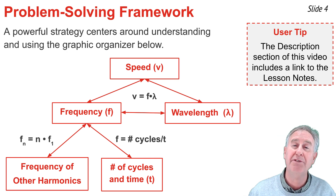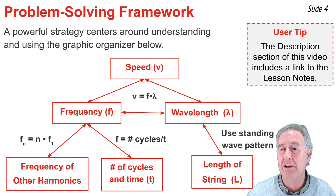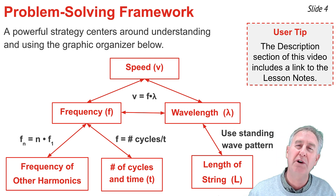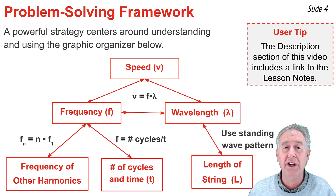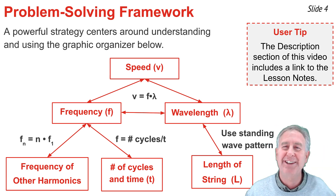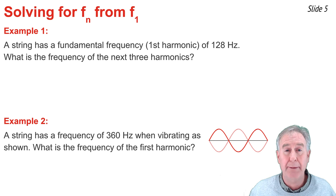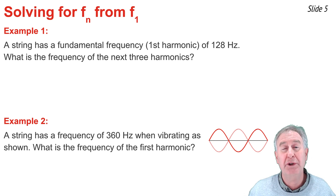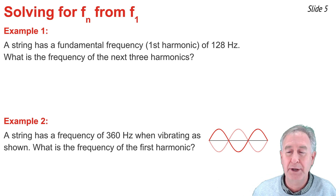Often you need to solve for the length of the rope, string, or wire. You can relate this to the wavelength by inspecting the standing wave pattern — figure out how many wavelengths fit within the rope's length, then solve for wavelength or length from the other quantity. This problem-solving graphic organizer is available on our website; a link is in the description.